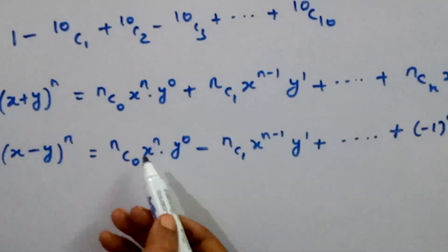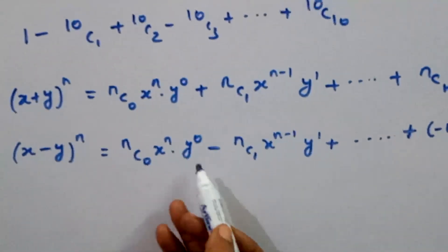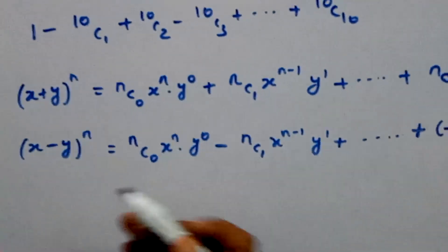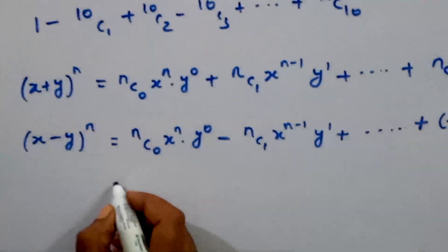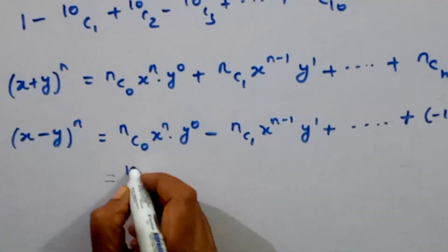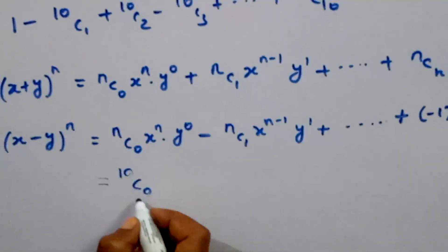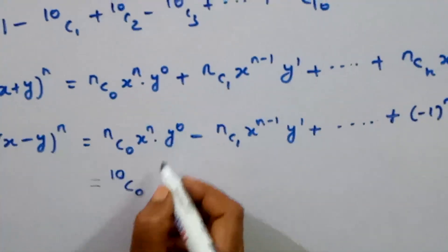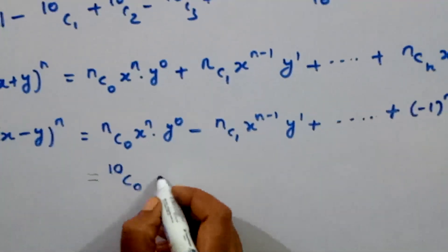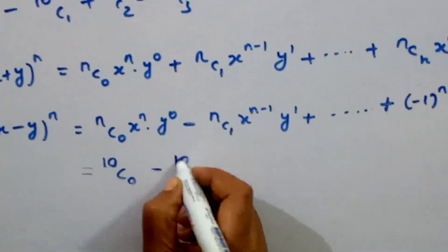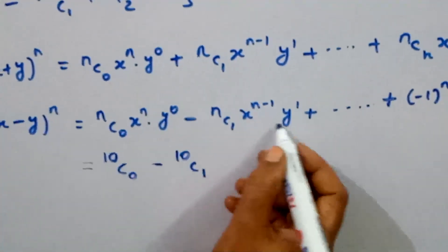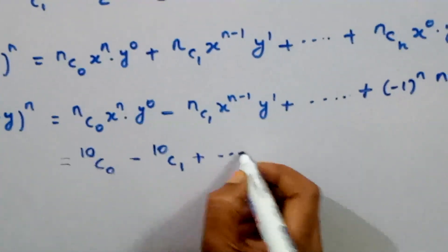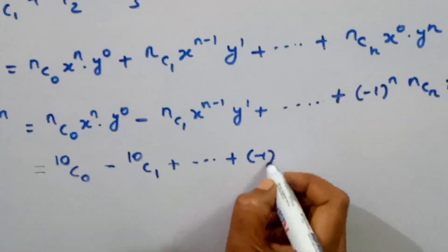We apply x equals 1 and y equals minus 1 to this expansion. We apply 10c1, and the terms become: plus 1 minus 1 to the power 10, giving us the series 1 minus 10c1 plus 10c2 and so on up to plus or minus 10c10.